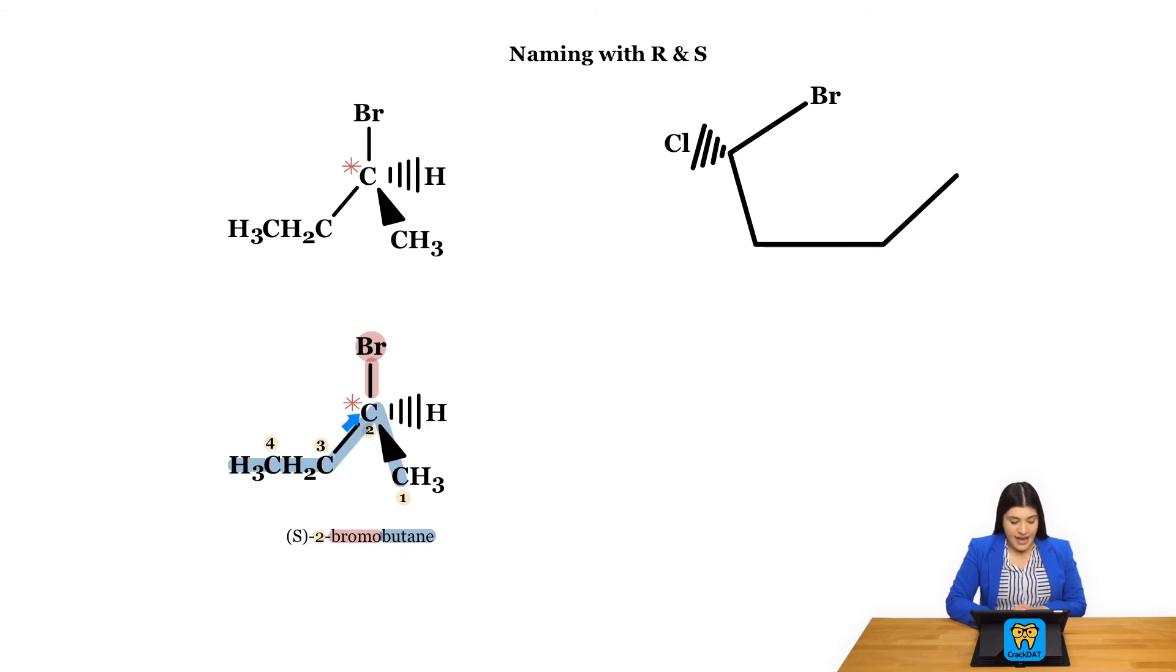Next, at our second carbon on our carbon chain, I have bromo. So here's bromo located at 2.